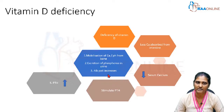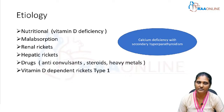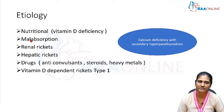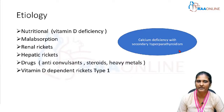Based on these criteria, vitamin D deficiency can be classified into: calcium deficiency, phosphorus deficiency, and vitamin D resistant. The most common cause is nutritional, followed by malabsorption, renal rickets, hepatic rickets, and drugs like anticonvulsants, steroids, heavy metals, and vitamin D dependent rickets type 1 — which is a mutation of the 1-alpha hydroxylase enzyme. In all these, there is calcium deficiency along with secondary hyperparathyroidism.